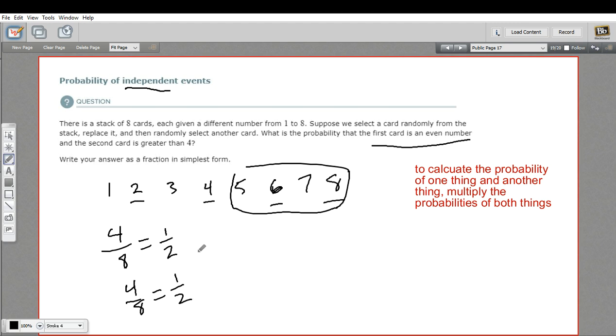Now if we want the probability that the first card is an even number and the second card is greater than four, we multiply those probabilities. One half times one half. When you multiply fractions, you multiply across the top and across the bottom. One times one is one. Two times two is four. So it's a one in four chance that you'll get a first card that's even and a second card that's greater than four.